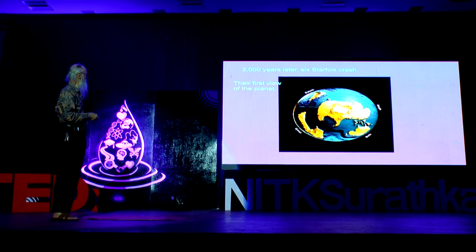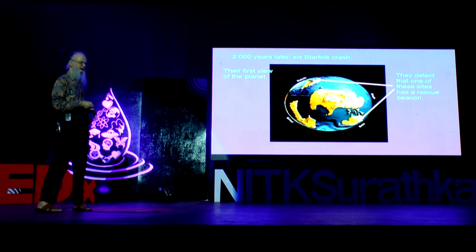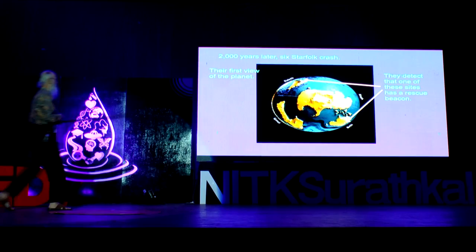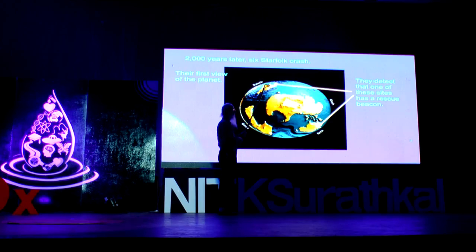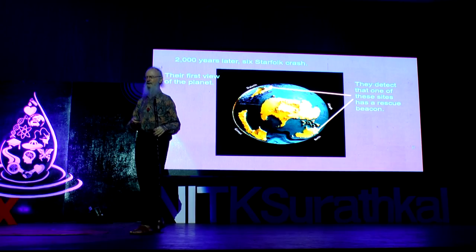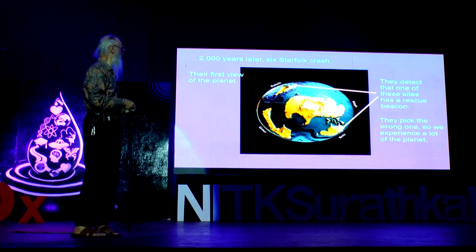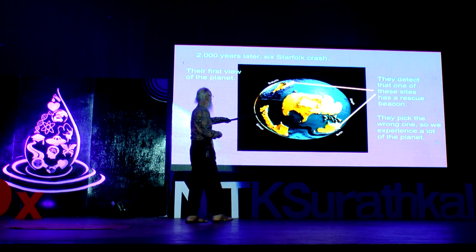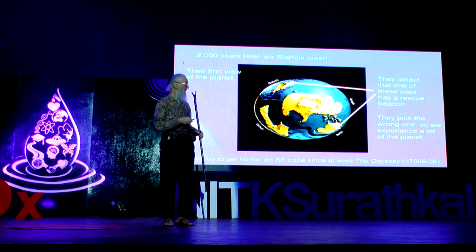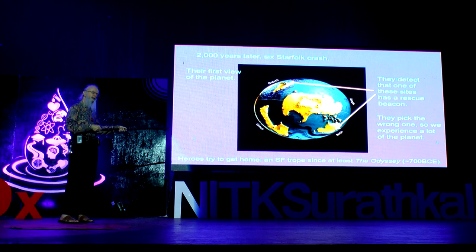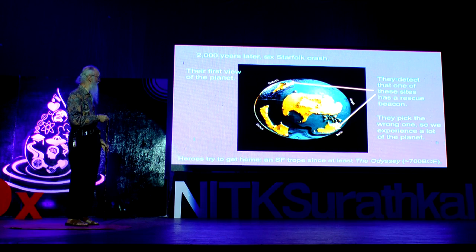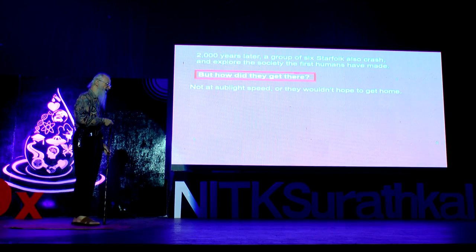So, plot-wise, 2,000 years later, a group of six young star folk also crash, and explore the society the first humans had made. They get the first view of the planet. They give Hebrew letters to the continents — that's all they know. They detect that one of these sites has a rescue beacon, the button they can press roughly that would get them rescued, but they don't know which one. Narrative inevitability means that they picked the wrong one, so we get to experience a lot of the planet as they travel from one to the other. This has been a basic plot element for nearly 3,000 years, and it still works very well.